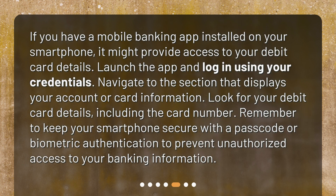If you have a mobile banking app installed on your smartphone, it might provide access to your debit card details. Launch the app and log in using your credentials, then navigate to the section that displays your account or card information. Look for your debit card details, including the card number. Remember to keep your smartphone secure with a passcode or biometric authentication to prevent unauthorized access to your banking information.